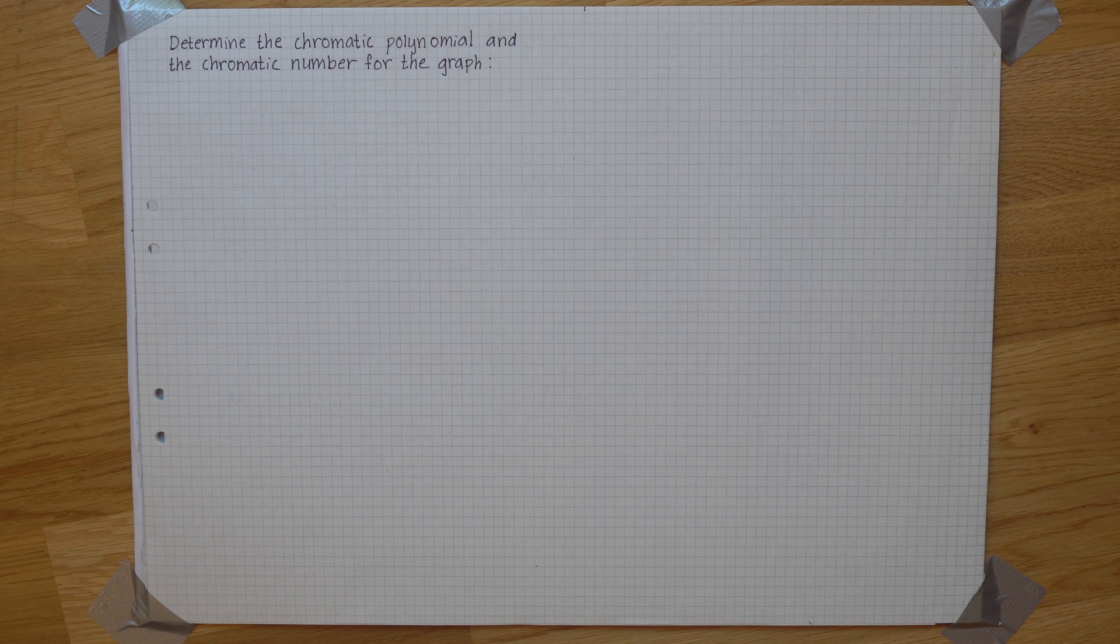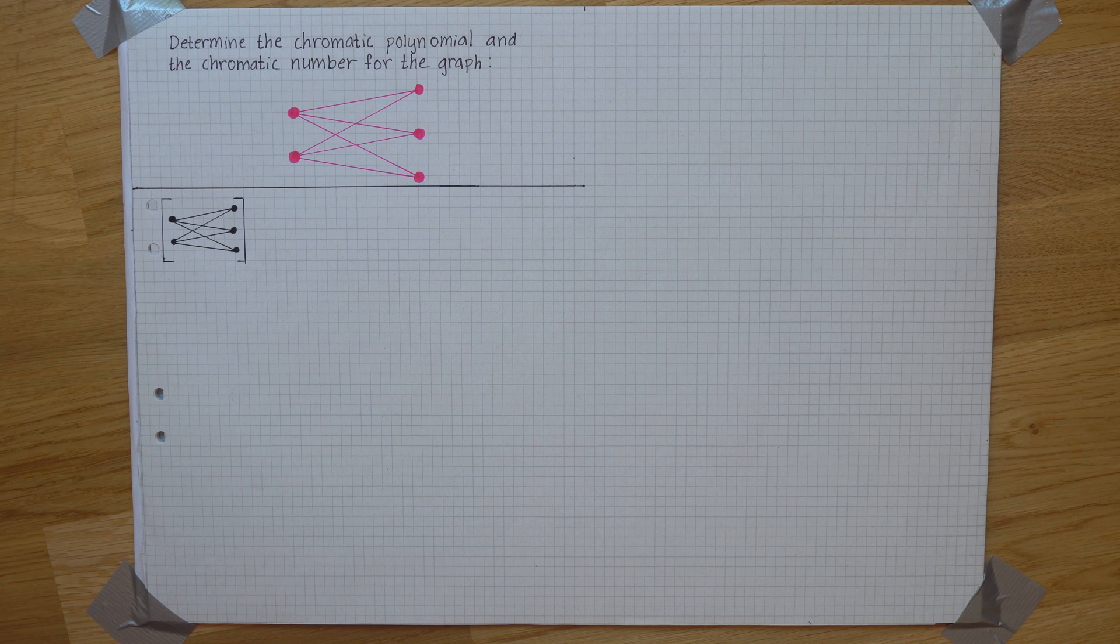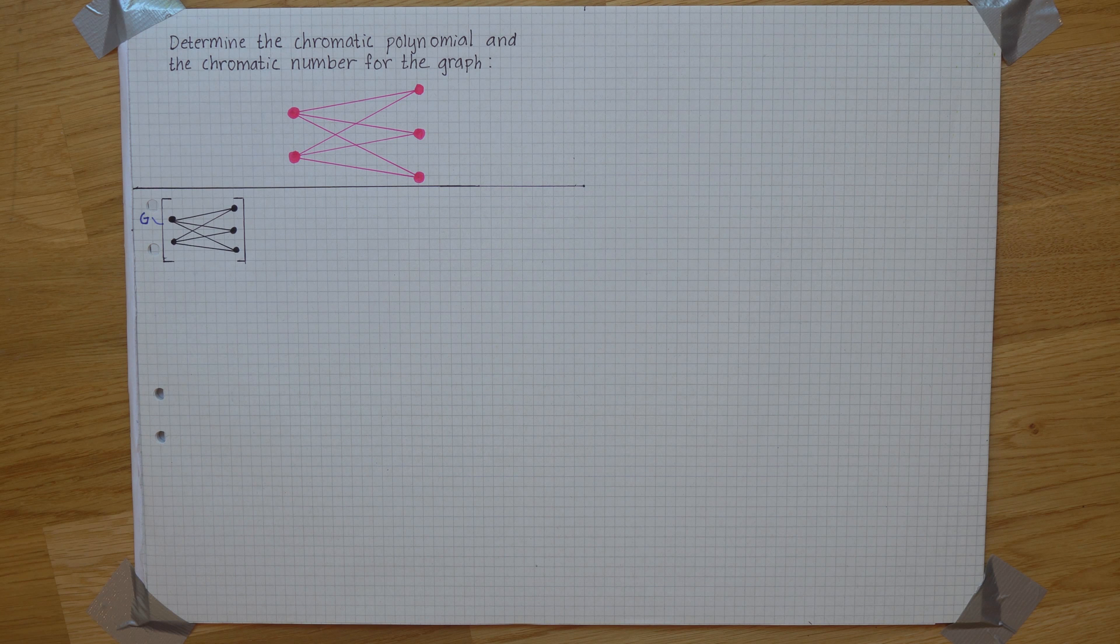We want the chromatic polynomial and the chromatic number for this graph. Let's take the original graph that here will be called G to keep track of things and add a connection between these two points.